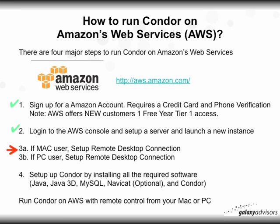Overall there are four steps to run Condor on Amazon Web Services, and you've completed the first two. Step one was to sign up for an Amazon account. Step two was to log into the AWS console, set up a server, and launch a new instance, which hopefully is running right now. You're now at step 3A if you're a Mac user to set up remote desktop connection. If you're a PC user, you can stop this video and go to 3B to set up remote desktop connection on a PC.